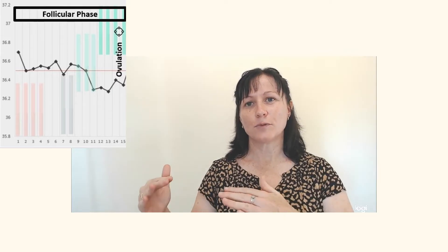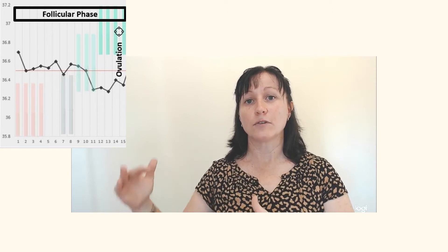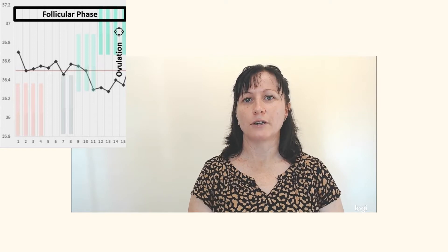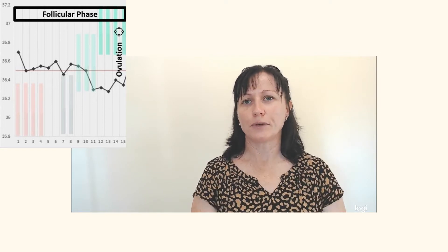The ovulation event itself is that 12 to 24 hour window when the egg is released and it's viable. Well, nothing will actually change in your temperatures to let you know you've reached that window, that one to two days. Temperatures will remain in a general lower range from the beginning of your cycle right through to ovulation. They don't change when you actually reach that point.